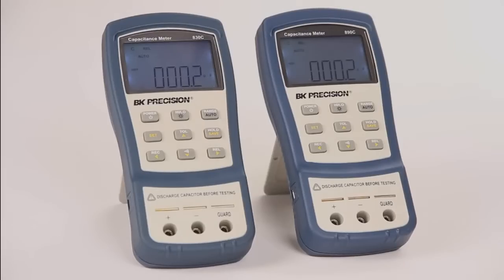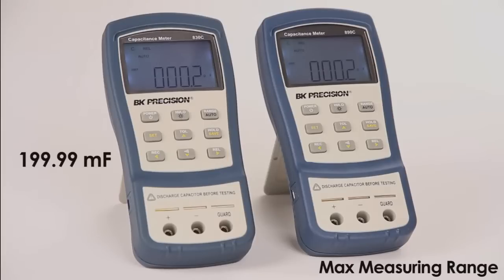Here are the models 830C and 890C. Both are dual display handheld capacitance meters. The main difference between the two meters is their max measuring range, which is 199.99 millifarad for the 830C and 50 millifarad for the 890C.